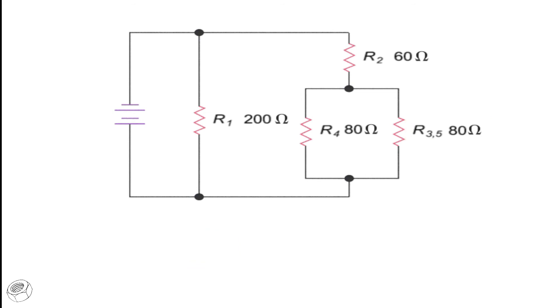Now, the R4 resistor and the equivalent resistance of the R3 and the R5 resistors are in parallel. Their combined resistance can be calculated by dividing their product by their sum. Thus, using the product over sum equation, we have 80 times 80 equals 6400 divided by 80 plus 80, which is 160, giving 40 ohms.